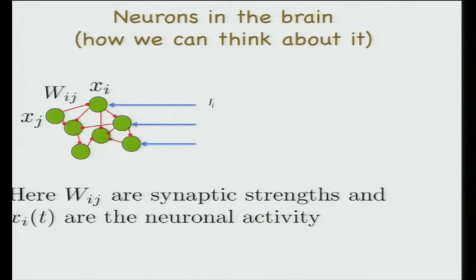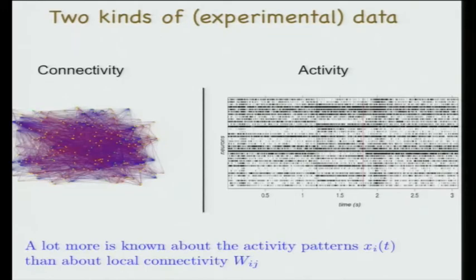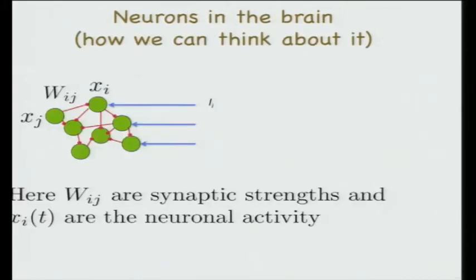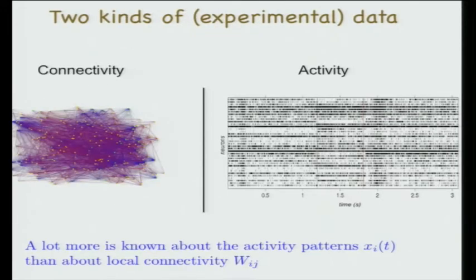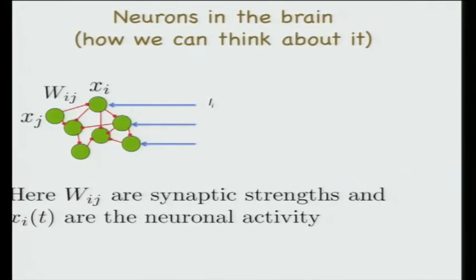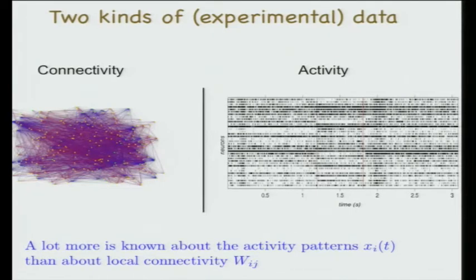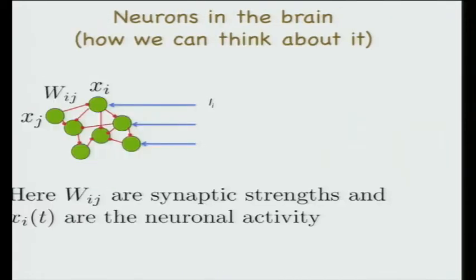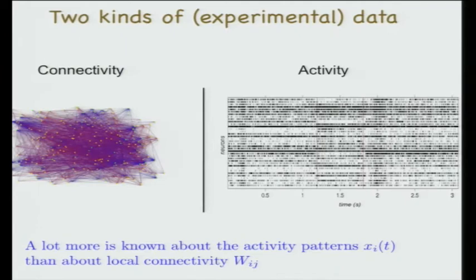The firing rate is a time-dependent quantity. From this graph there are two kinds of data: the synaptic weights—which are what memory is made of—and the activity variable xi. This activity, shown with time on the x-axis and different neurons on the y-axis, is an oversimplification; in reality it consists of discrete events called spikes.